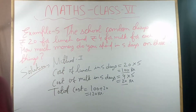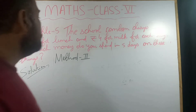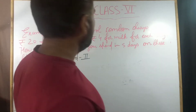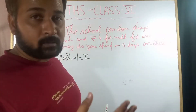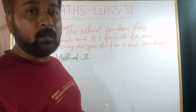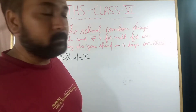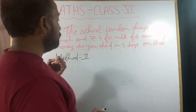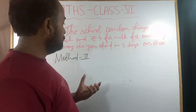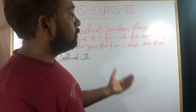100 plus 20 gives us 120 rupees. Now we will solve this question using the second method. In Method 1 we found the five-day cost of milk and the five-day cost of lunch separately.